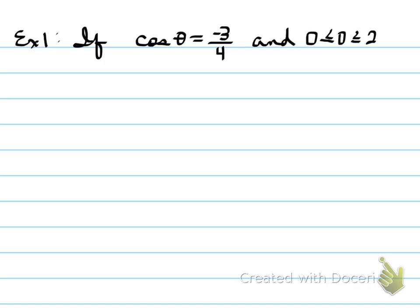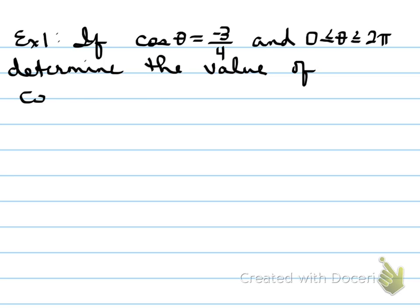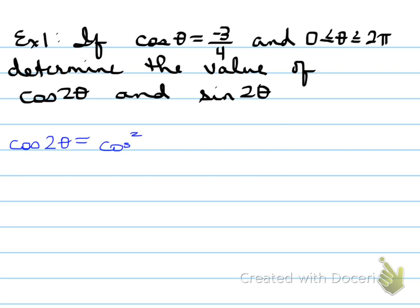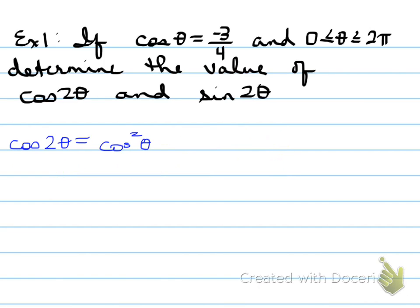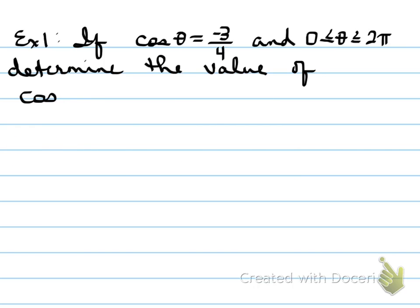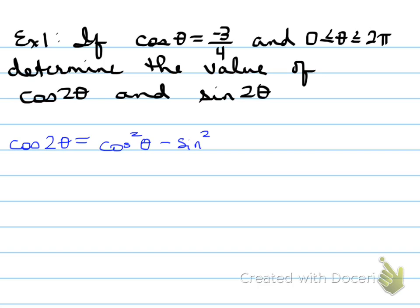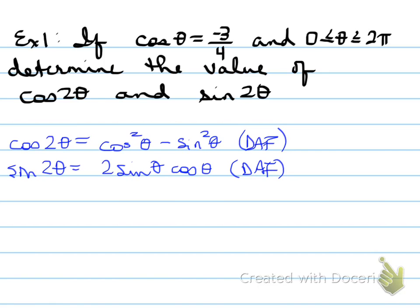Alright, example number one. If you're given that cos θ equals negative 3 over 4, and θ is between 0 and 2π, you need to determine the value of cos 2θ and sine 2θ. Well, cos 2θ is equal to cos² θ minus sin² θ using the DAF rule. And sin 2θ equals 2 sin θ cos θ using the DAF rule. So if I know cos θ, I can automatically find the value of sin θ, knowing that θ is between 0 and 2π.